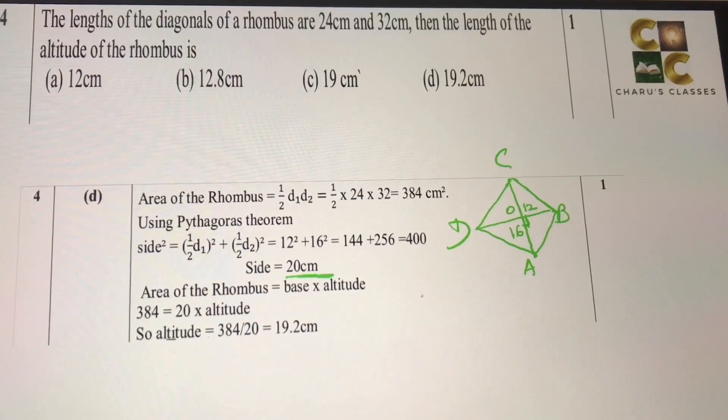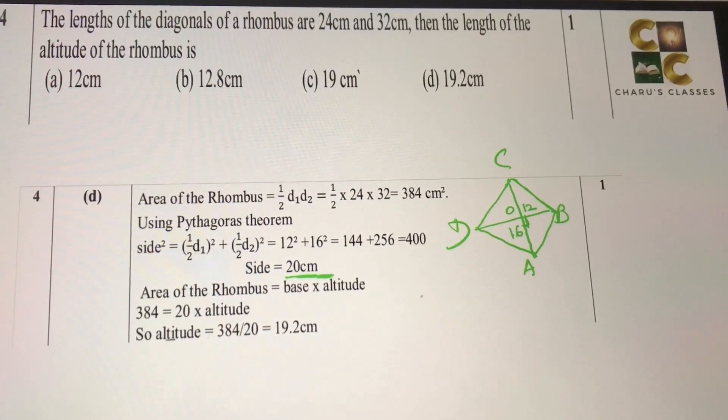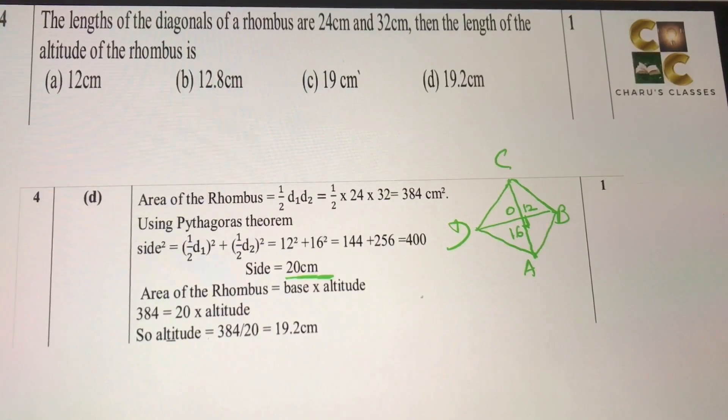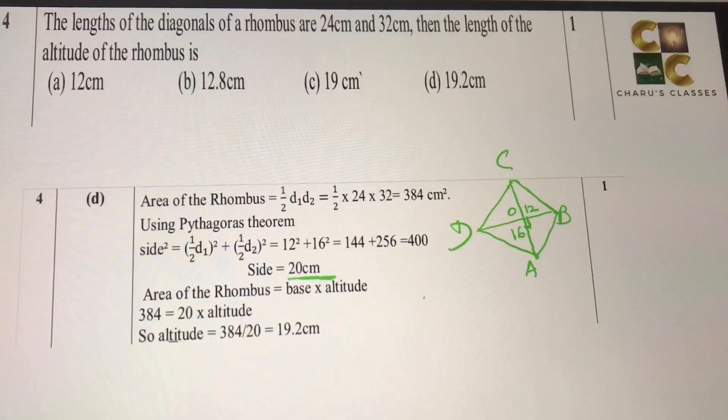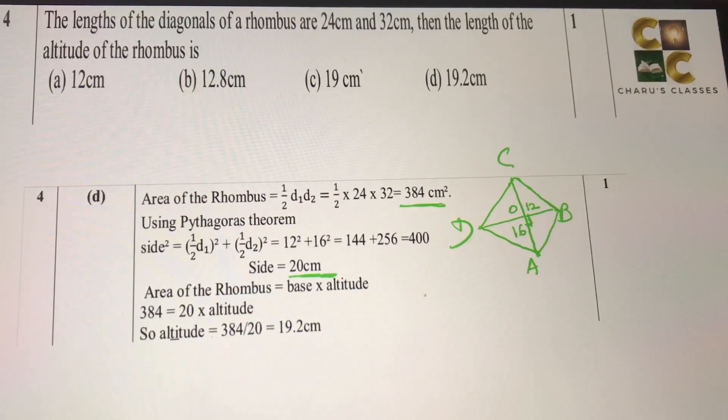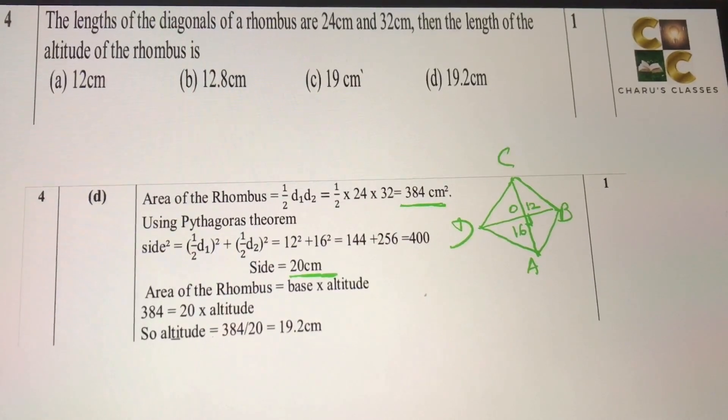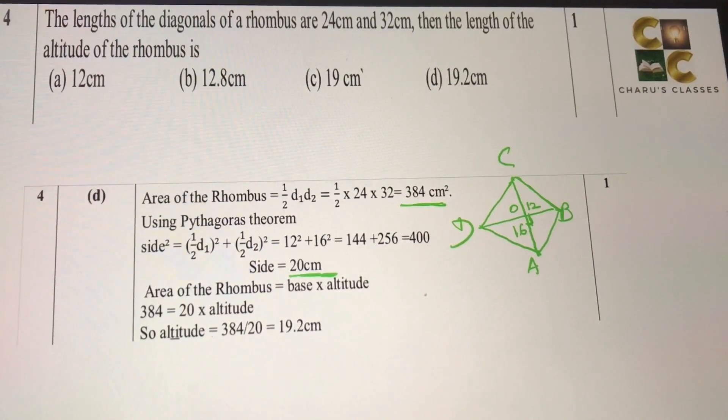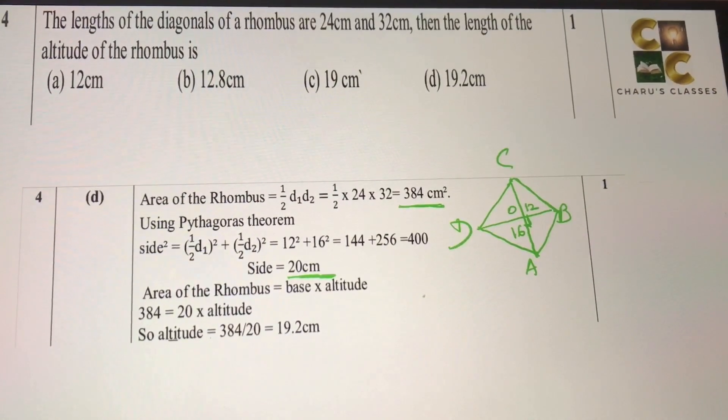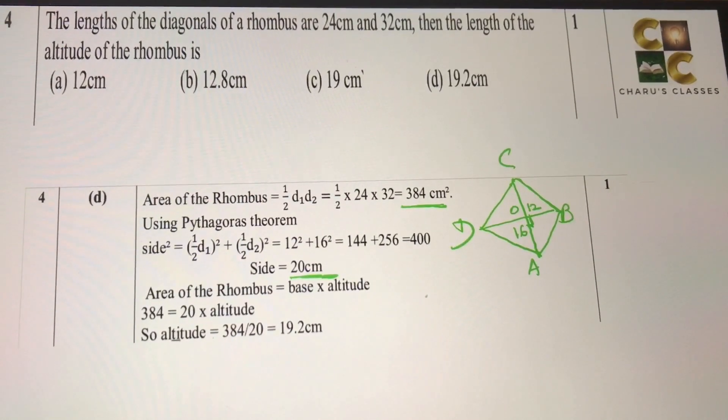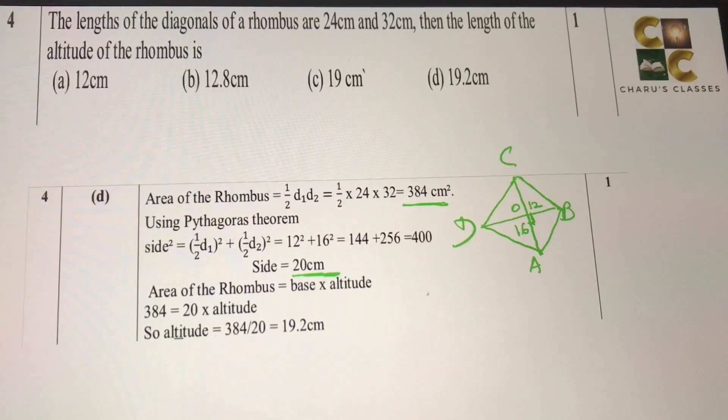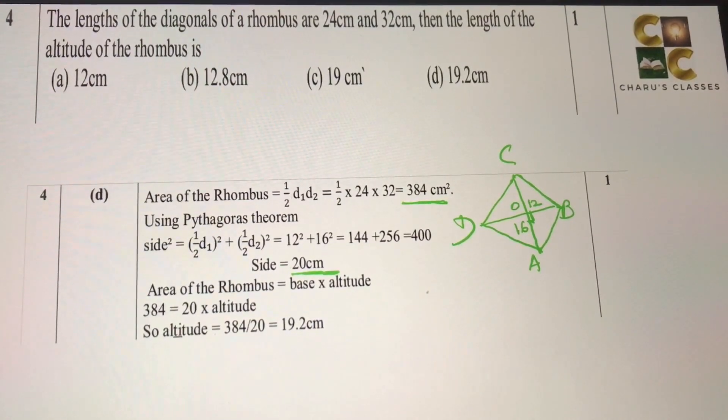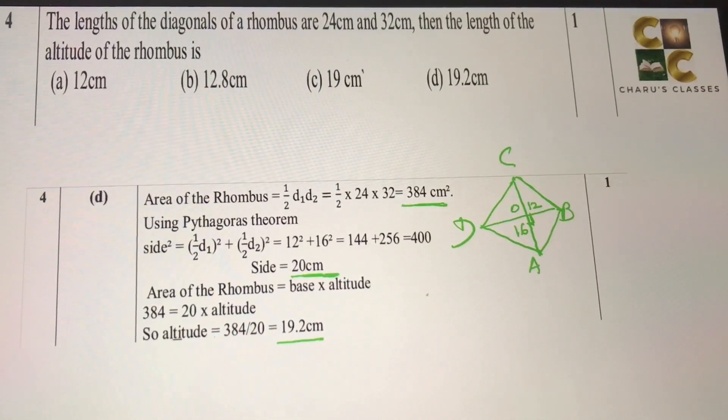that area of a rhombus has two formulas. One is half d1 into d2, that is, half into product of the two diagonals. From this we found area of rhombus, which is coming as 384 cm square. Now we also know the side from Pythagoras theorem, and we know area of rhombus. The second formula is base into altitude. For any parallelogram, base into height is also one formula for the area. So using that, you can find the altitude, you will get 19.2 cm.